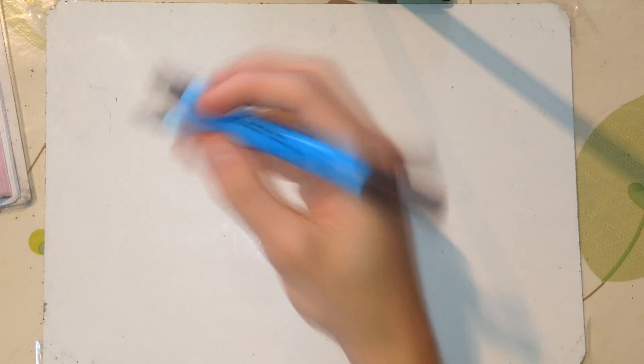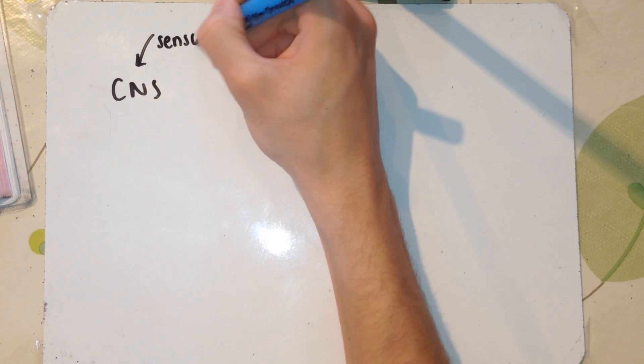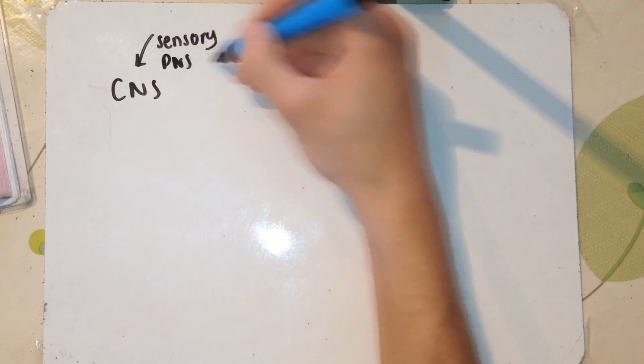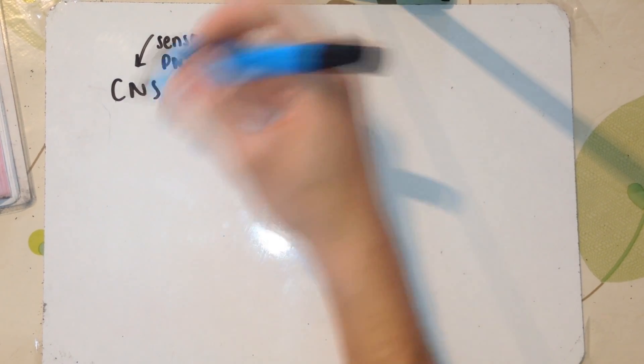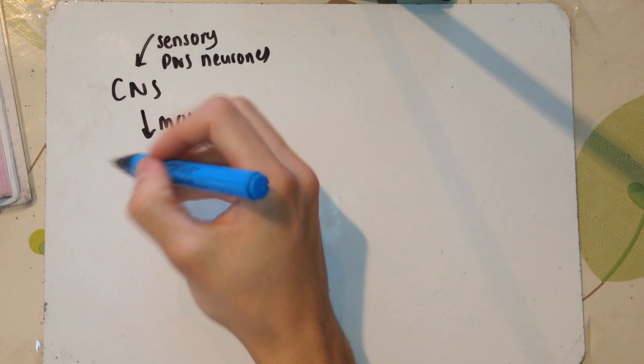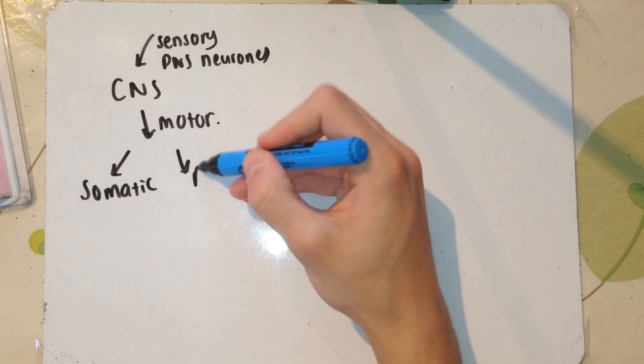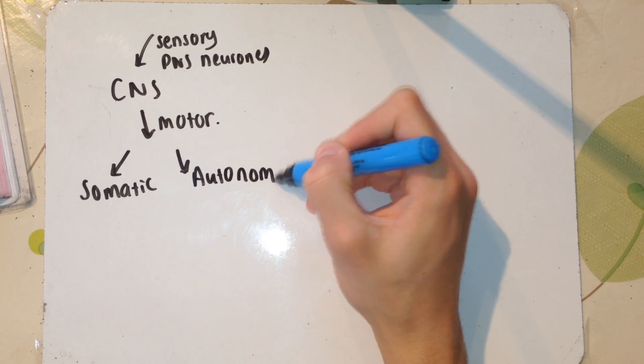Sensory motor neurons travel from receptors in our body, in our peripheral nervous system, to our central nervous system. The brain then deals with the information that's been given and responds by using motor neurons. The PNS motor neurons can be divided into somatic motor neurons and autonomic motor neurons.